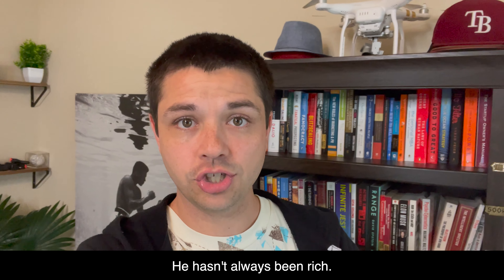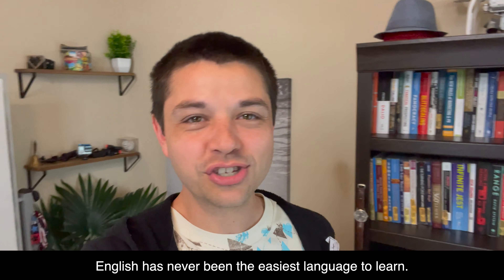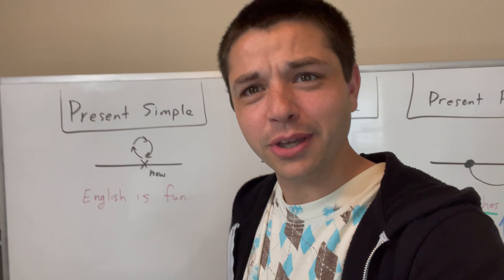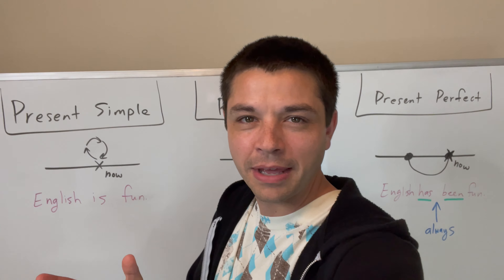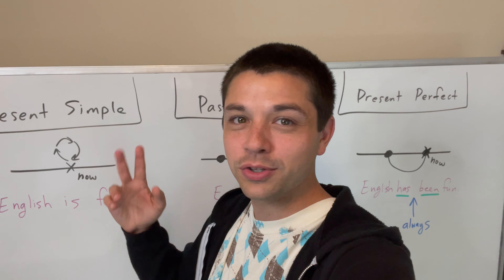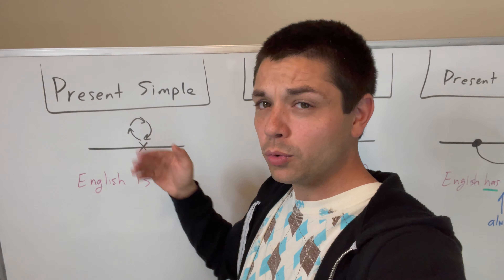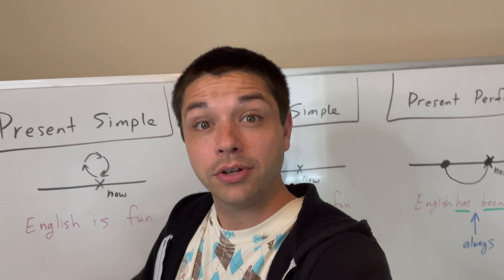So we can say that something 'has always been,' and it can be about existing — it can be about the verb 'to be.' Like we said, 'it hasn't always been here' — it's about just being. But sometimes we use it in a different way. We might say, 'he hasn't always been rich.' If we say 'he hasn't always been rich,' this means he became rich at some point, and before that he was not rich. English sometimes is difficult to understand because of phrases like this. In fact, English has never been the easiest language to learn.